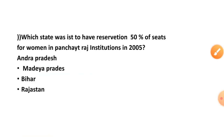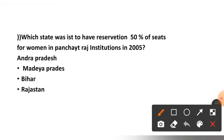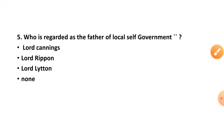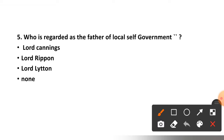Question number five: Which state was first to have reservation of 50% of seats for women in Panchayat Raj institutions in 2005? Andhra Pradesh, Madhya Pradesh, Bihar, or Rajasthan? The correct option is option C — Bihar.